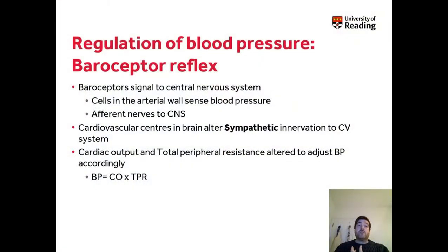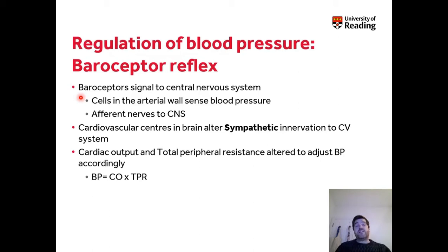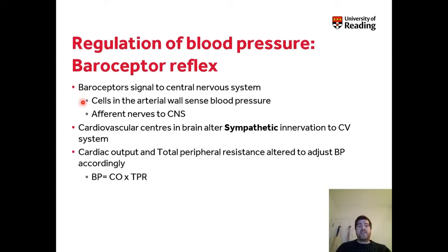Let's start looking at the baroreceptor reflex. Essentially, baroreceptors signal your blood pressure to the central nervous system. They consist of cells in the arterial wall, found in the aortic arch and in structures called the carotid bodies. They sense blood pressure and have afferent nerves — afferent meaning they take information to the central nervous system.